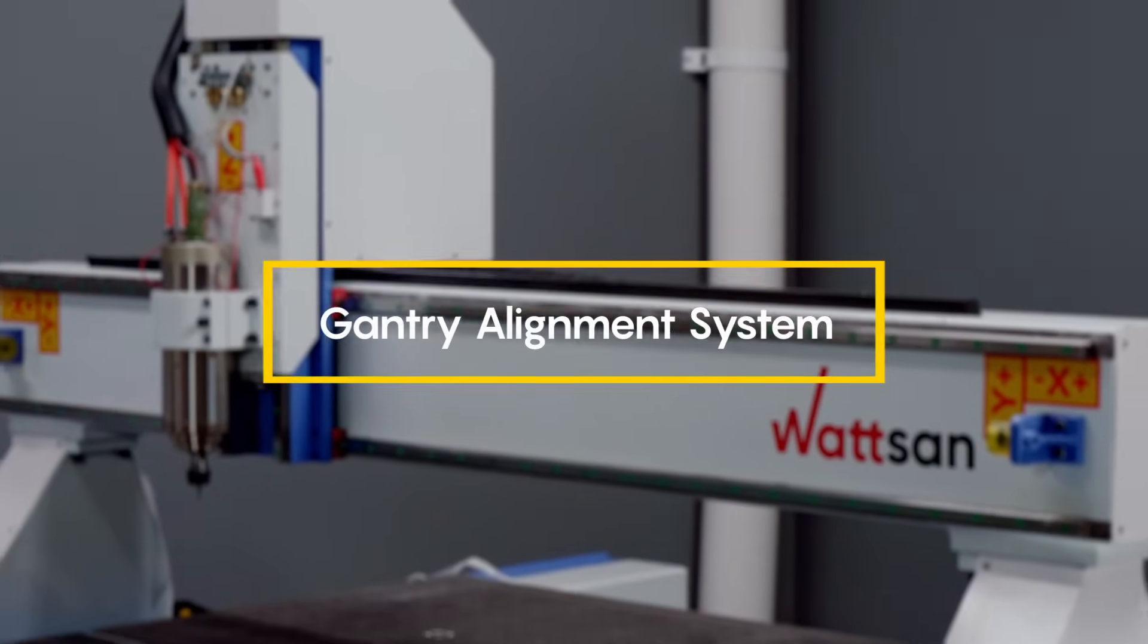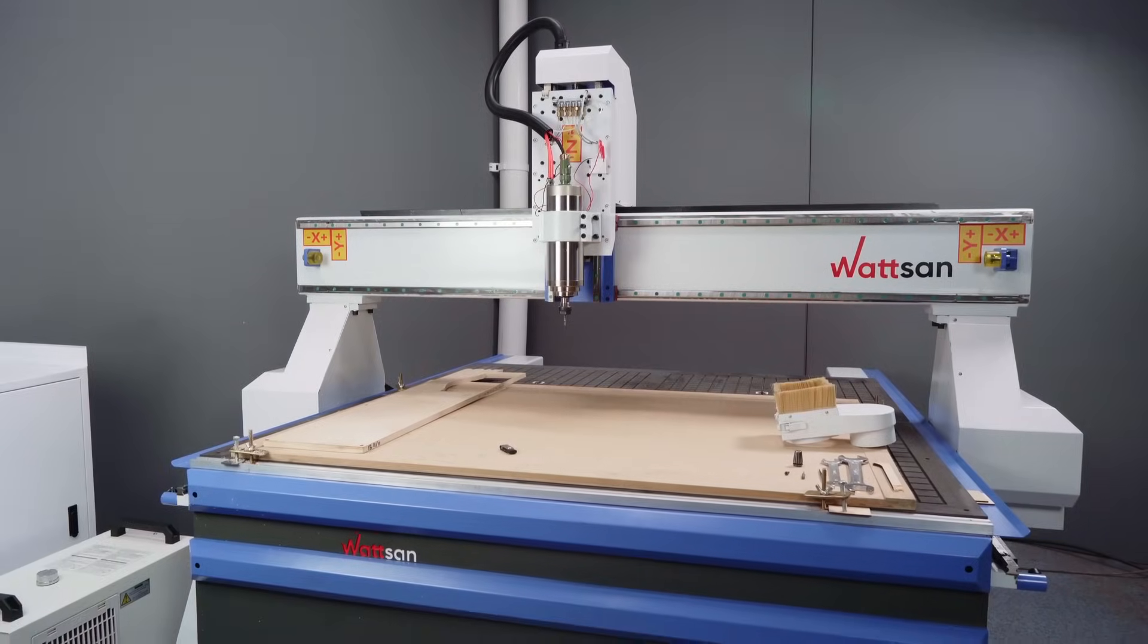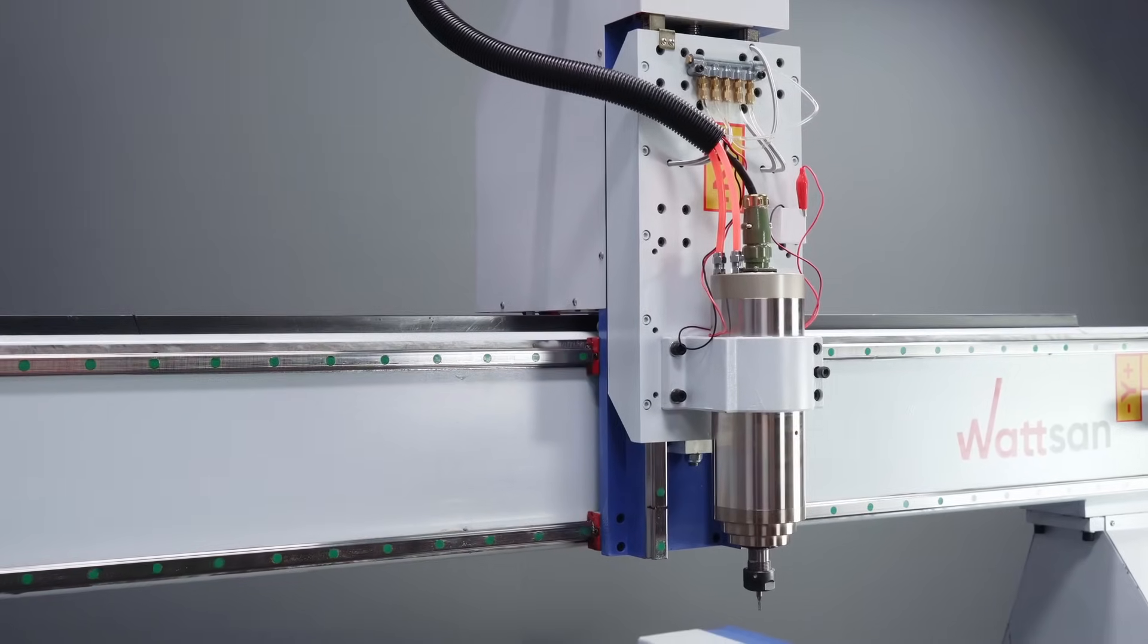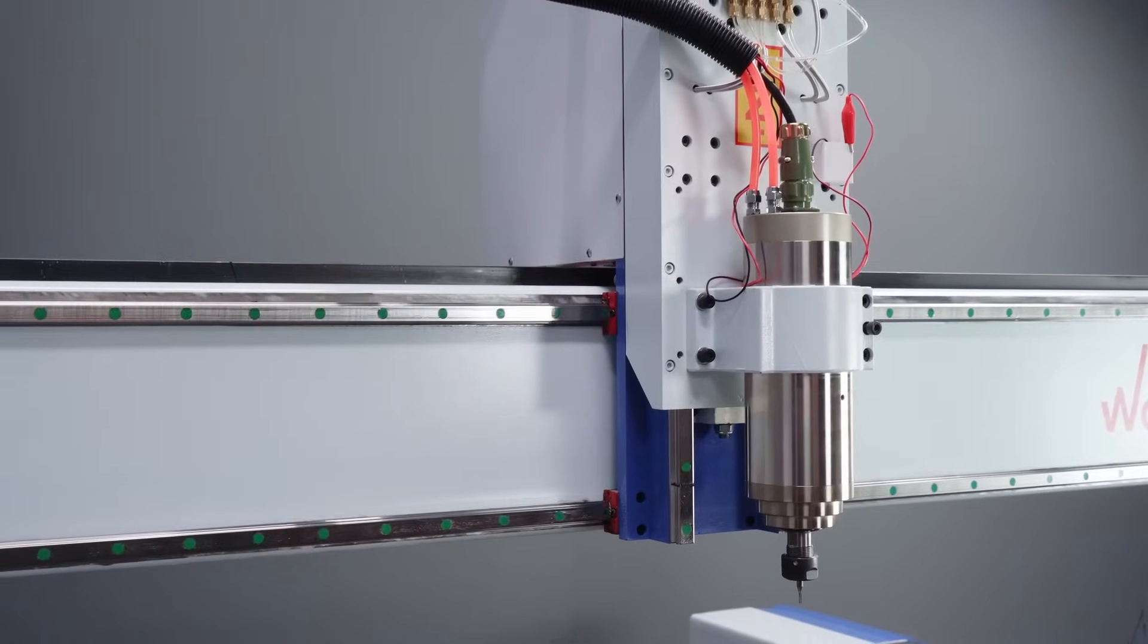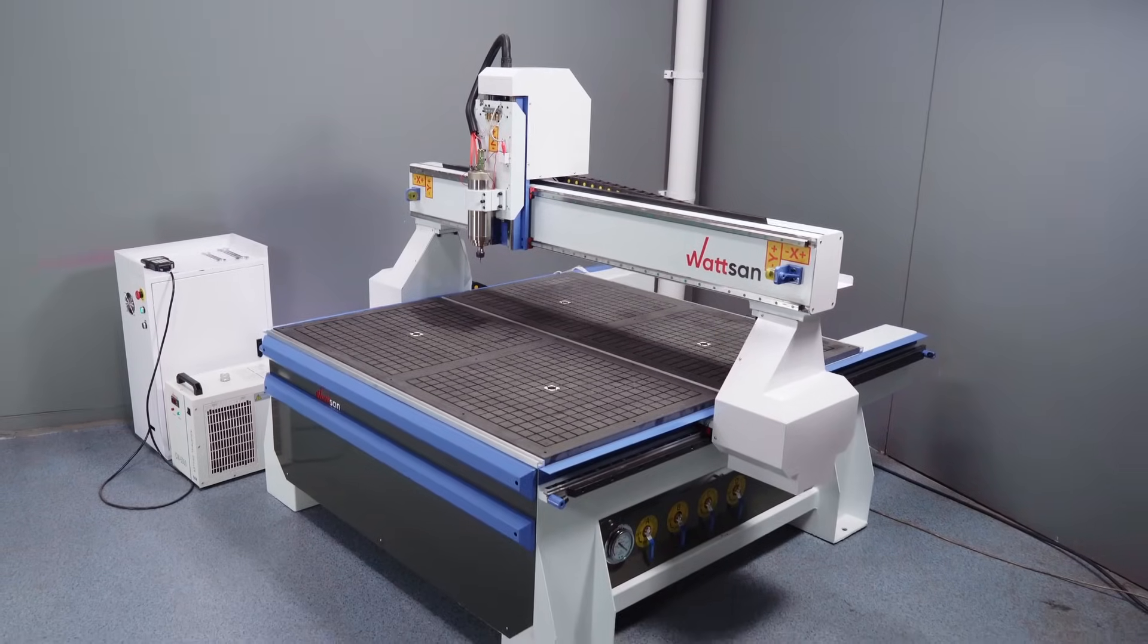Gantry alignment system. The system automatically aligns the gantry along the Y axis. If the gantry is not aligned, its perpendicularity is compromised, which can lead to one of the drives jamming and step loss in the stepper motor.